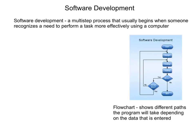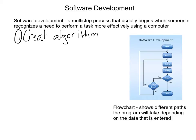Software development is a multi-step process that usually begins when someone recognizes a need to perform a task more effectively using a computer. Step one for software development is to create an algorithm, which is a very big task. The next thing they do is create a flowchart.